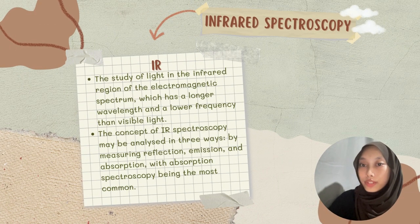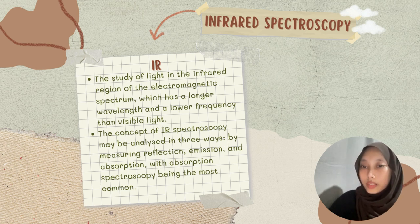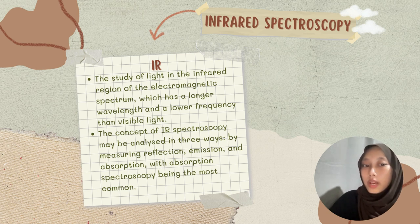My name is Nick Dayang Damyakai Sara, student ID 2021616854, and I will be covering infrared spectroscopy. IR is the study of light in the infrared region of the electromagnetic spectrum, which has a longer wavelength and a lower frequency than visible light. IR spectroscopy may be analyzed in three ways: by measuring reflection, emission, and absorption, with absorption spectroscopy being the most common.